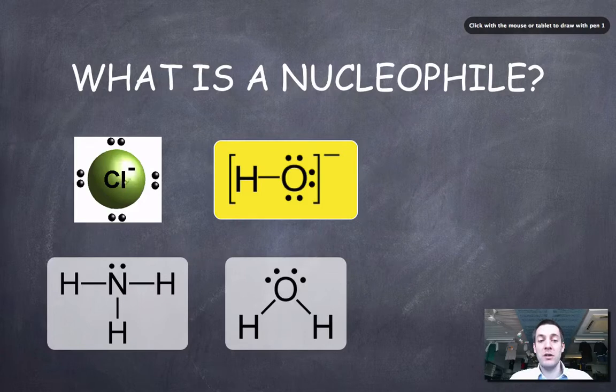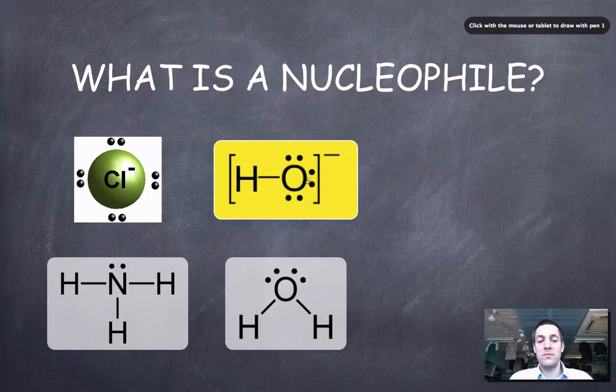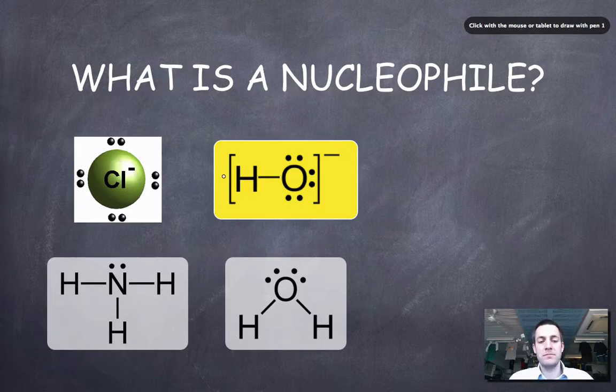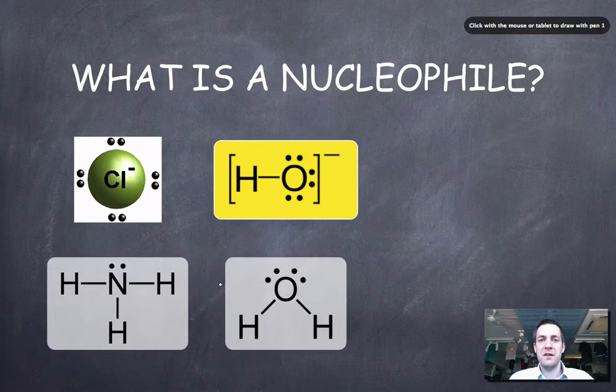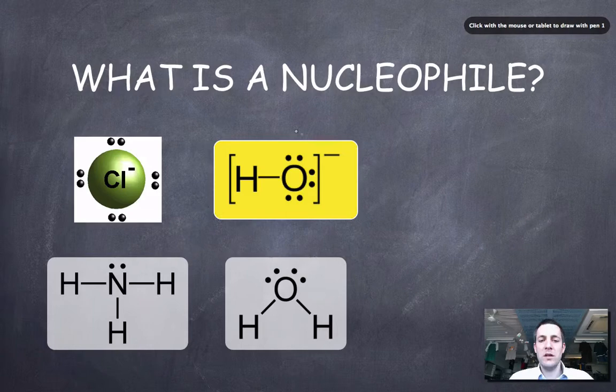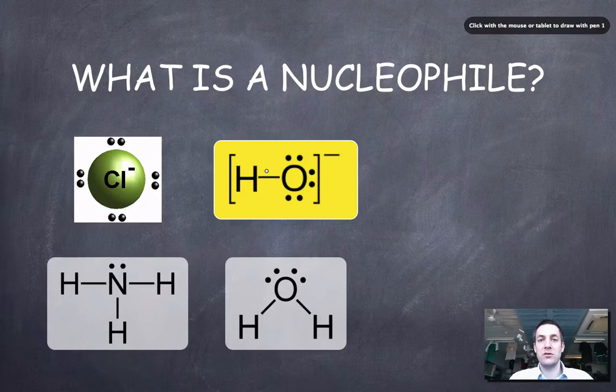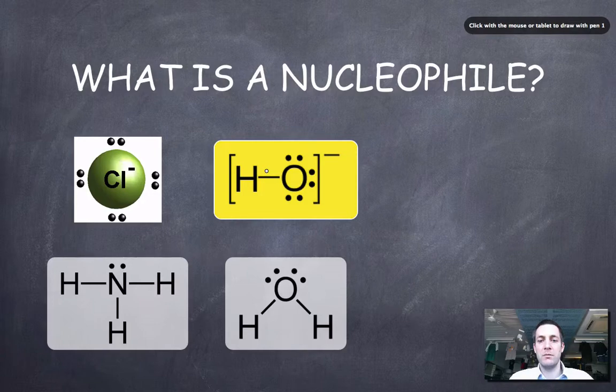We could have a chloride ion could be a nucleophile because it's got lots of lone pairs. Hydroxide ion too. These two things are both negatively charged and a negative charge is in fact a lone pair of electrons. You don't have to have a negative charge to be a nucleophile. But as I've said this is by far the most commonly seen nucleophile in our course and the definition is an important one to know. So lone pair of electrons that can be used to make a covalent bond.